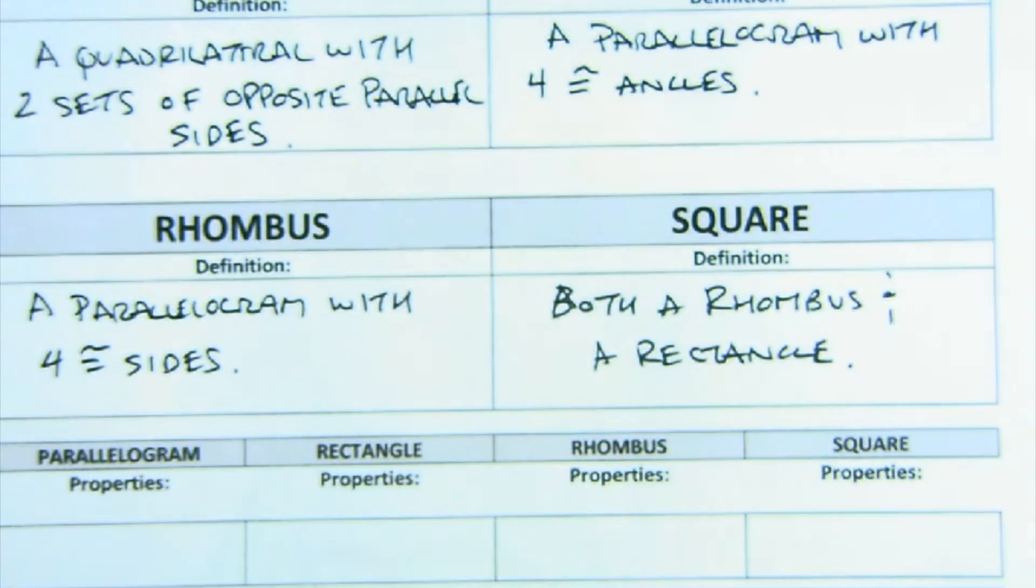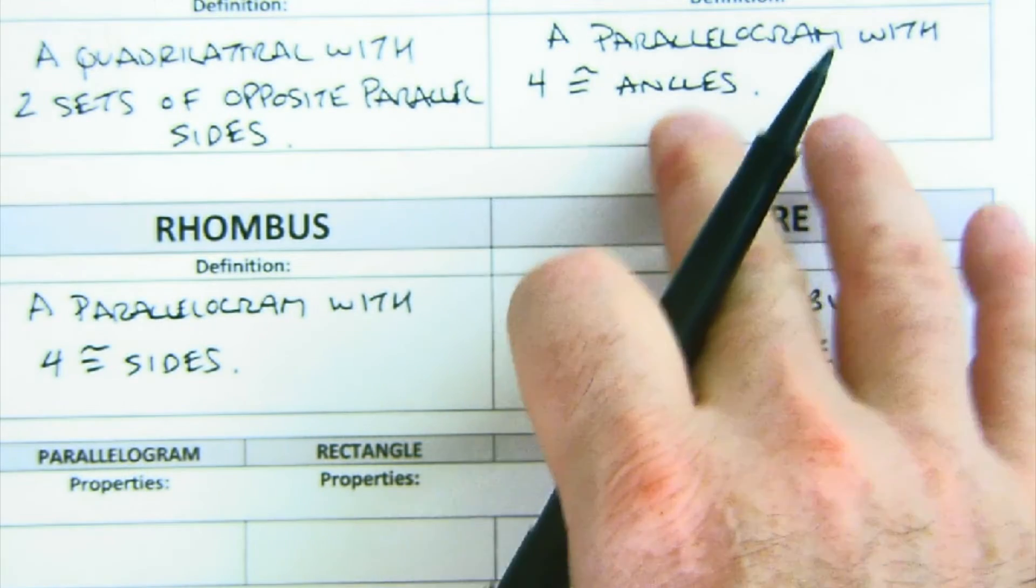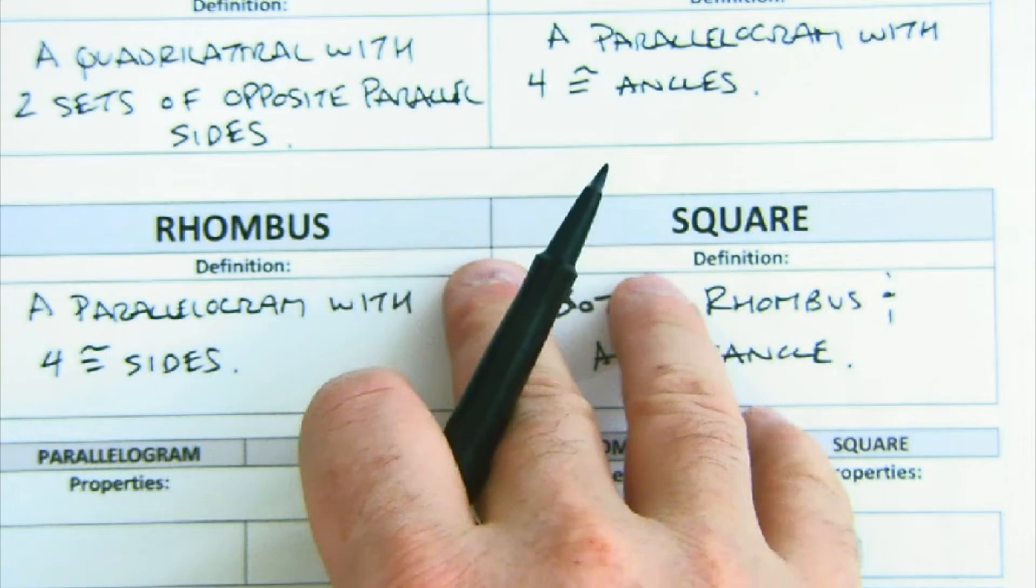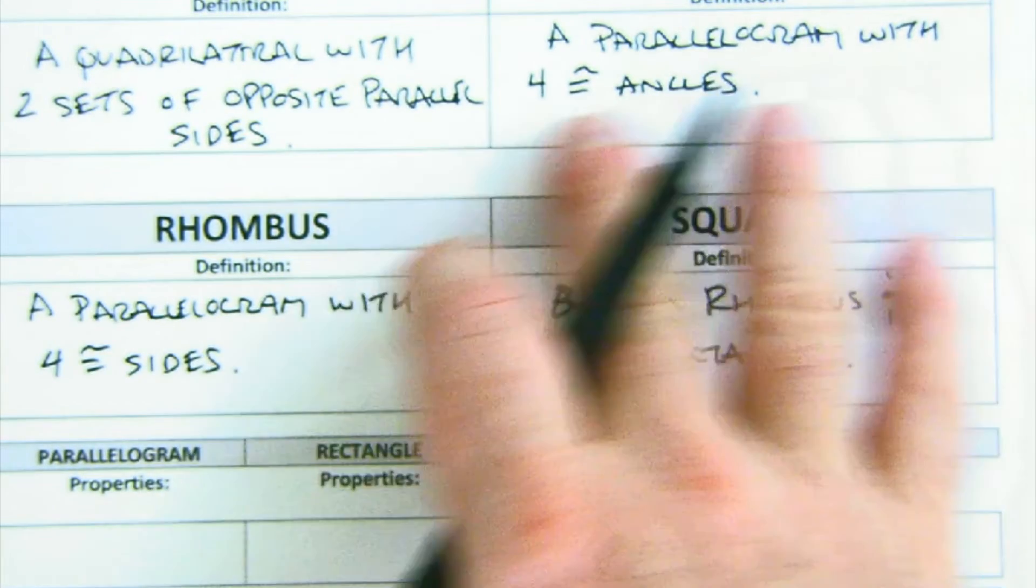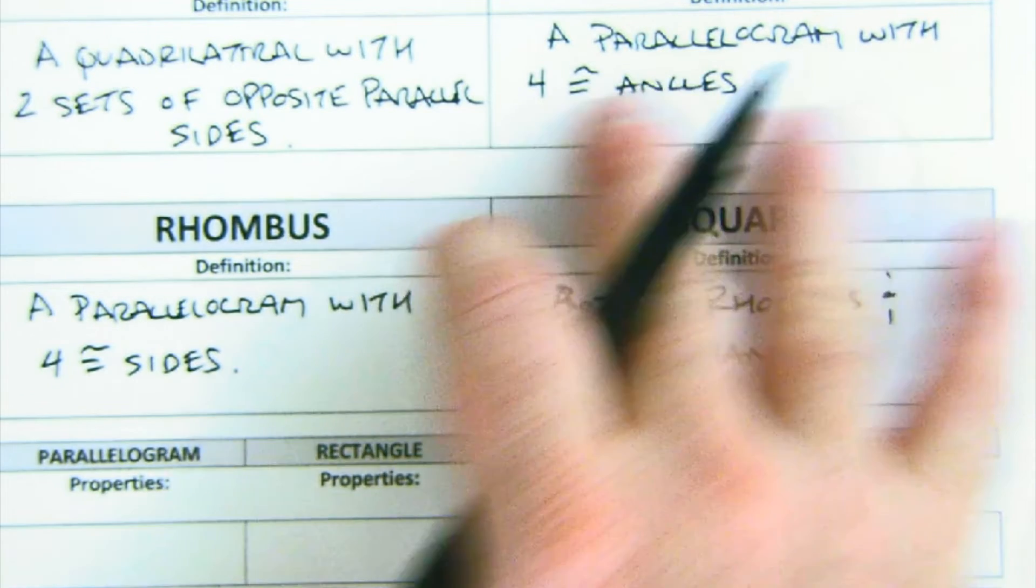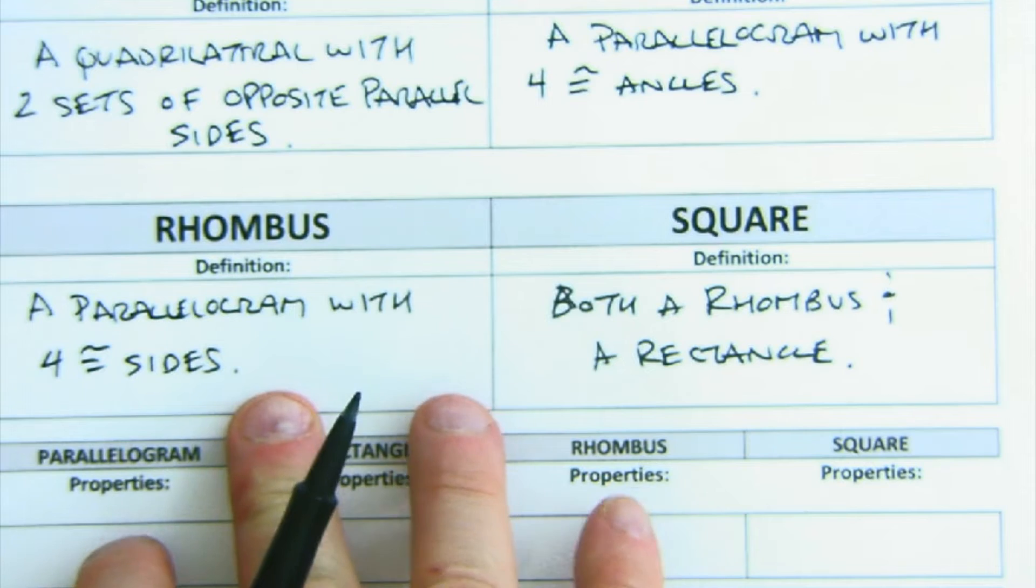First of all, parallelogram is a four-sided shape, a quadrilateral, where there are two sets of opposite sides that are parallel. A rectangle is a parallelogram with four congruent angles. These are the ones that could vary—this could just say a quadrilateral with four congruent angles or with four right angles. There's a couple of different ways that one gets set.